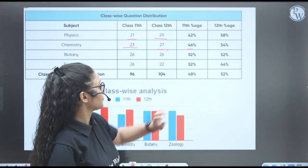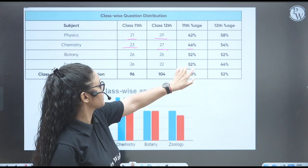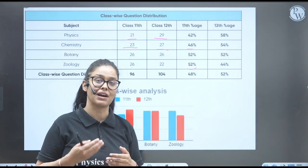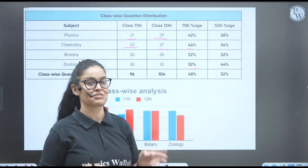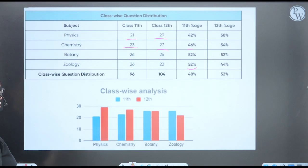32, 23 questions from the 11th and 27 from the 12th. So overall, 46, 54%. 26, 26, 52, 52 equal. And from here, 11th class, they have asked more questions from the 11th in Zoology, and less questions from the 12th itself. You can see over here the percentage in Physics and Chemistry from the 11th and 12th.